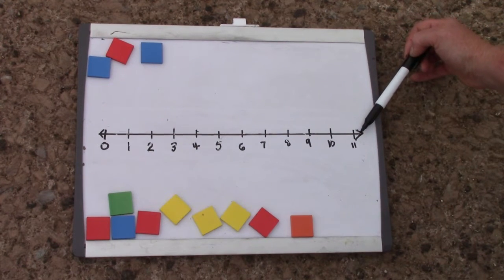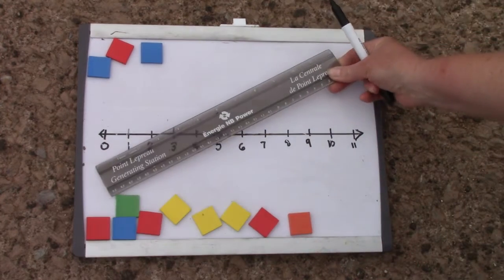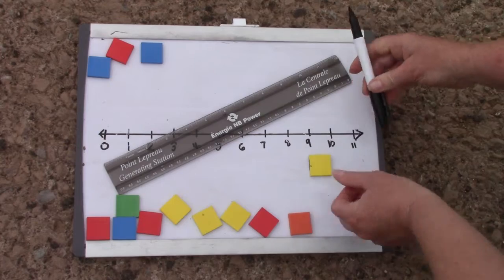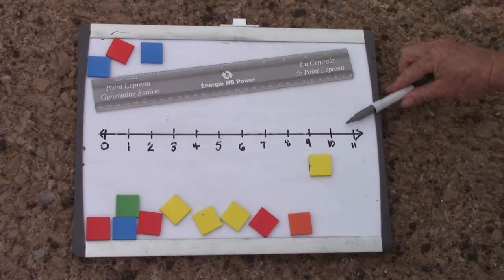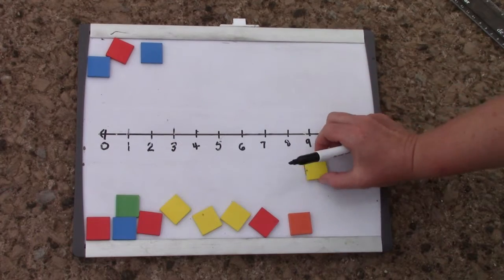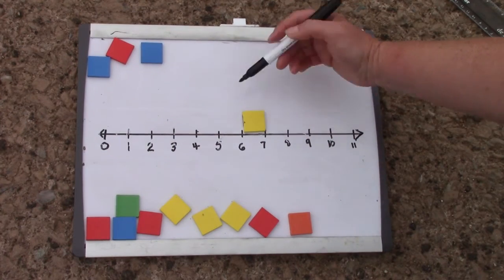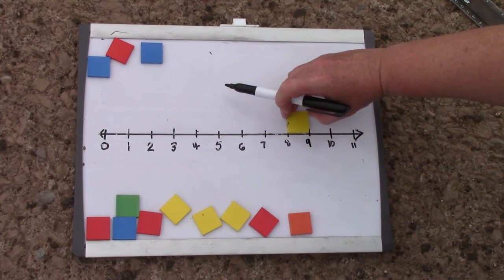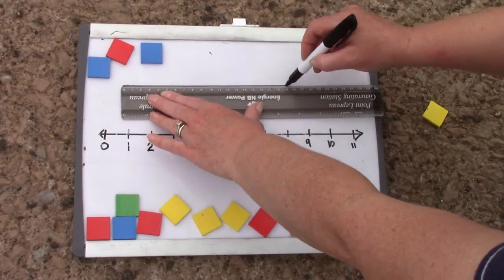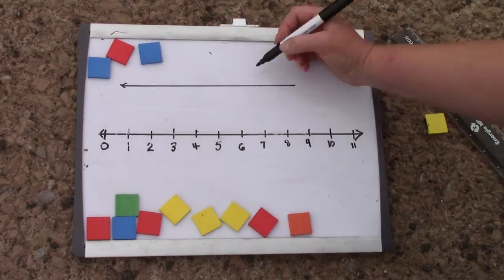Class today, I want you to practice using your ruler and make a number line. It's very important to remember that the spaces between your numbers, they should be the same length or the same width. I don't want you to make a number line that looks like this. This is going to be a silly number line.